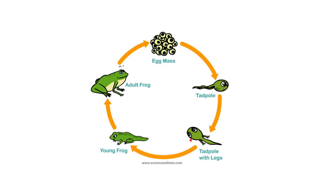Then it grows more and becomes a young frog. And at the end of the life cycle, the young frog grows and becomes an adult frog. So this is the life cycle of a frog.